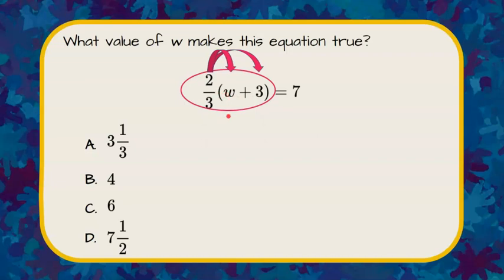So two-thirds times W is two-thirds W, and two-thirds times 3 we're going to multiply. So 3 times two-thirds, that would be 3 divided by 3, which is 1, leaving us an answer of 2. So two-thirds W is two-thirds times W plus 2, because 3 times two-thirds, or two-thirds times 3, is 2.